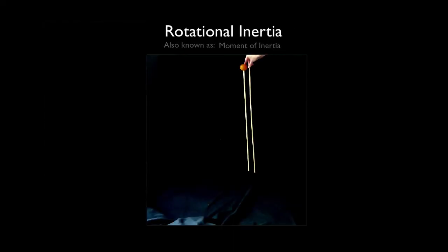Two standing sticks, one with an orange on top, the other without. They'll both fall forward. Which will fall slower?